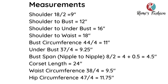The measurements I'll be working with: shoulder is 18 inches divided by two, giving nine inches. Shoulder to bust is 12 inches. Shoulder to under bust is 16 inches. Shoulder to waist is 18 inches. Bust circumference is 44 divided by four, which equals 11. Under bust circumference is 37 divided by four, which is 9.25. Bust span is 8 inches divided by two, giving 4 inches, plus half an inch allowance equals 4.5 inches. Corset length is 24 inches. Waist circumference is 38 divided by four, giving 9.5 inches. Hip circumference is 47 divided by four, giving 11.75 inches.